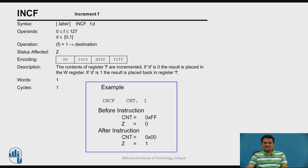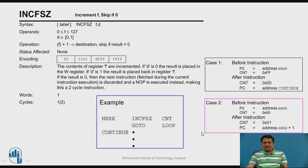Similarly, INCF increments the file register by 1. If the count value is FF and incremented by 1, the result is 00 and the zero flag is set. INCFSZ — Increment File Register and Skip if Zero — after incrementing, if the result is 0, the next instruction is skipped and PC jumps to CONTINUE. If the value is 00 before execution and incremented to 01 (non-zero), sequential execution proceeds to the next instruction.